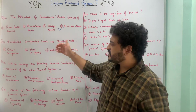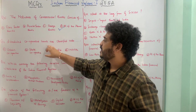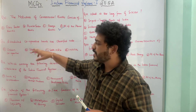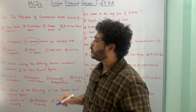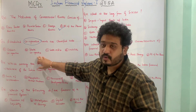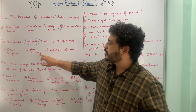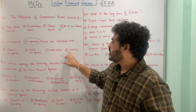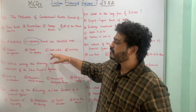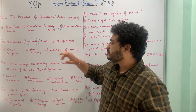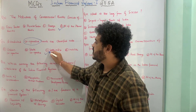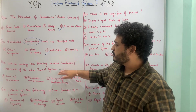Moving to the next MCQ: cooperative banks are classified into what? You have to read the question carefully — this is about cooperative banks, not commercial banks. Option A is urban cooperatives, B is state cooperatives, C is both A and B, and D is none of the above. The correct answer is both urban and state cooperative banks, so option C is correct.